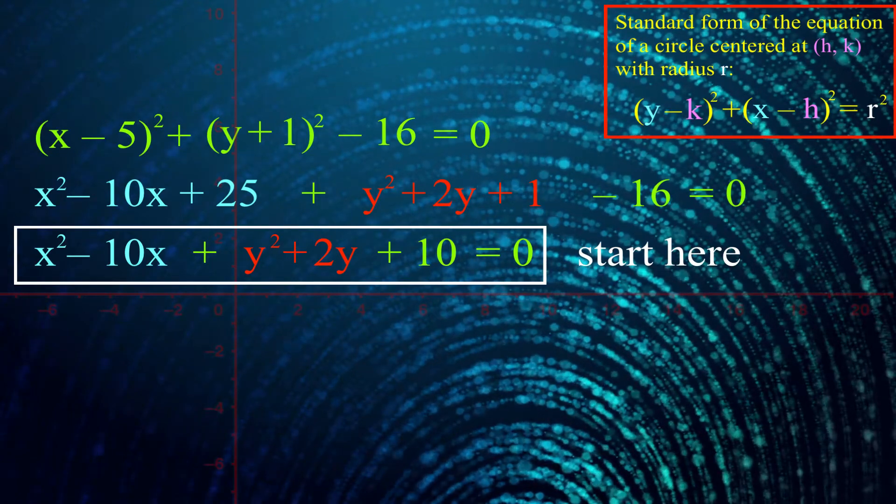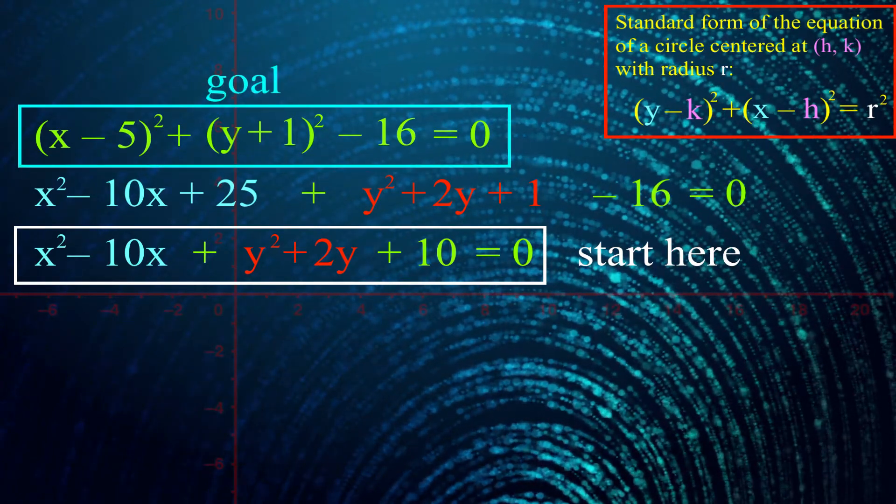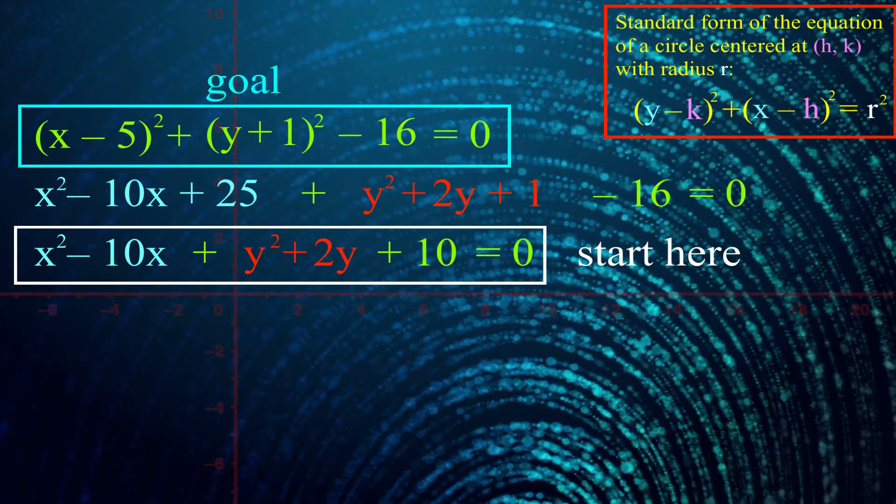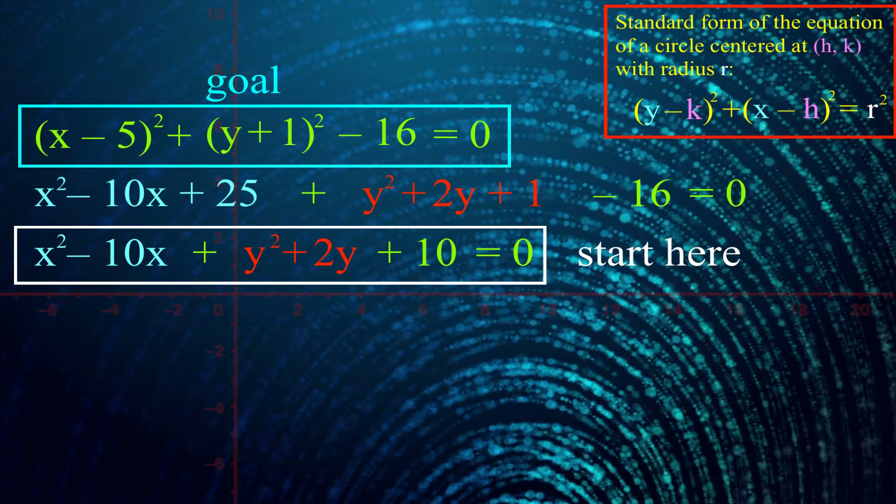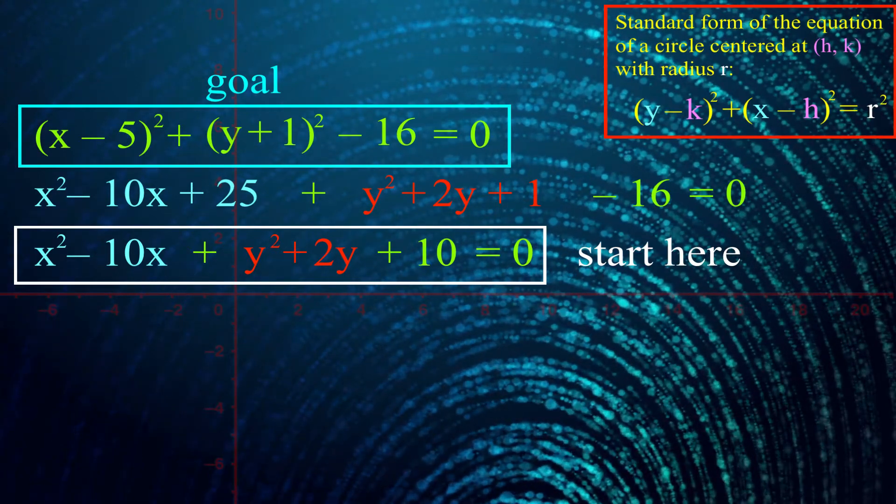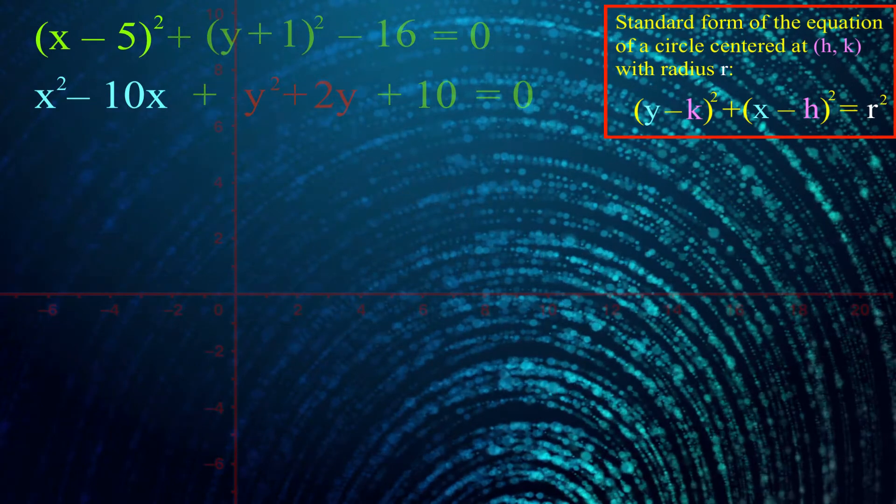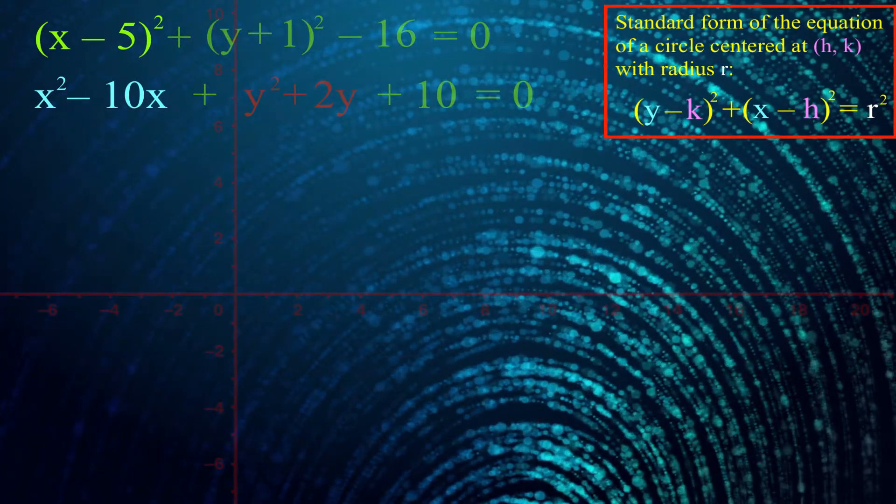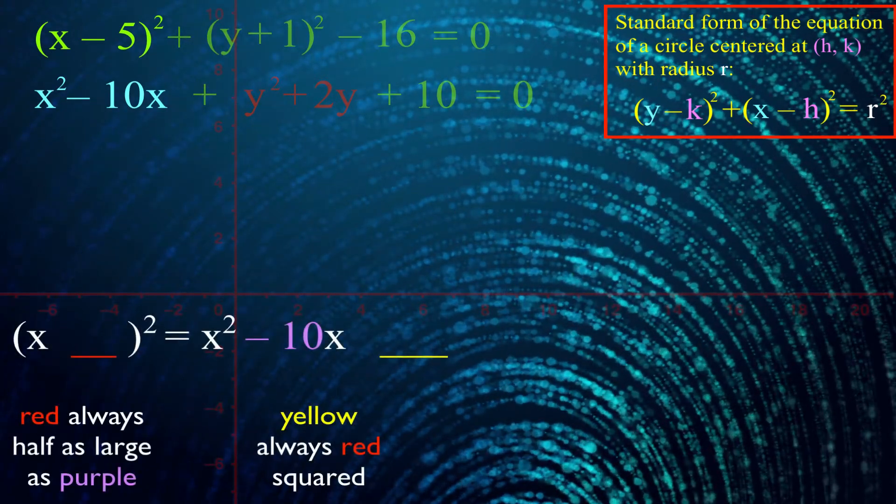Think about it like this. If we could just get back up to this top line, from there we can stare at the equation and figure out the center and radius fairly easily. How are we going to get there? Let me draw your attention to a couple terms in particular. And then let me remind you of what we learned in the previous video.